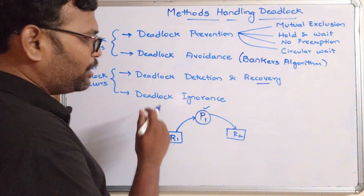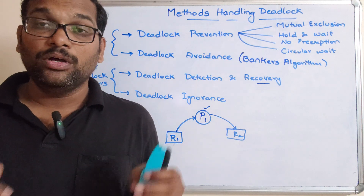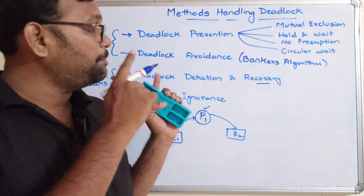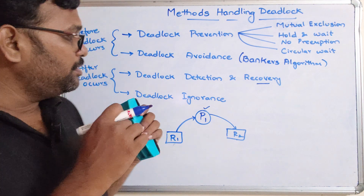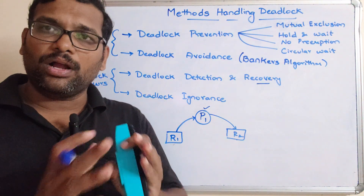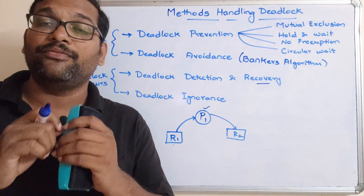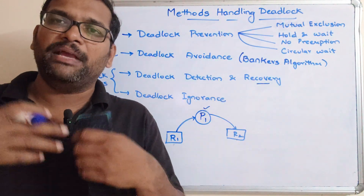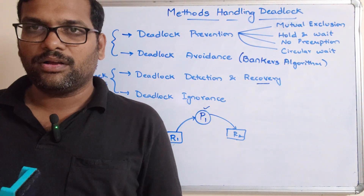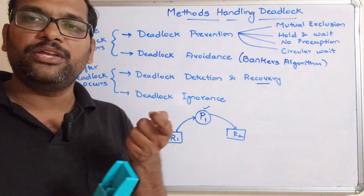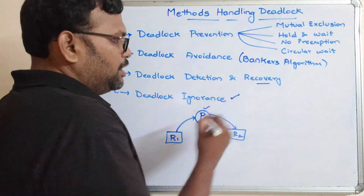The final method is deadlock ignorance — simply ignore if a deadlock appears. This is the method followed in operating systems like Windows and Linux. From the programmer's point of view, deadlock will practically never occur, and if it does, it may happen once in many years. That's why they ignore it. This is the common method used in operating systems like Windows and Linux.